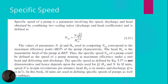Specific speed of a pump is a parameter involving the speed, discharge, and head obtained by combining two scaling ratios — discharge and head coefficient. The formula is Ns equals N·√Q / H^(3/4), where Hm is the manometric head of the pump at maximum efficiency point. The specific speed of a pump could be defined as the speed of a pump running at maximum efficiency under unit head and delivering unit discharge.